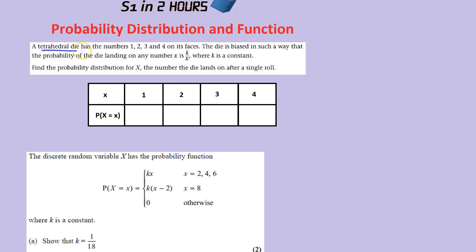A tetrahedral die, as in four sides, has the numbers 1, 2, 3, and 4 on its faces. The die is biased such that the probability of the die landing on any number is K over X, where K is a constant. Find the probability distribution for X. The probability distribution. Now we know that's the box, so we can fill in the numbers.